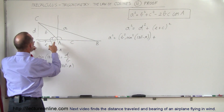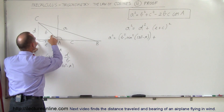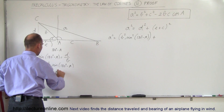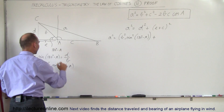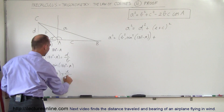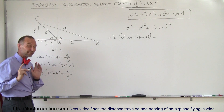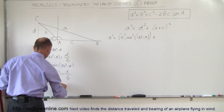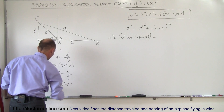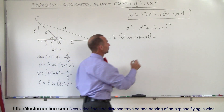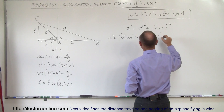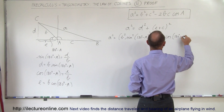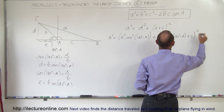Now E. How do we replace E? E is the adjacent side to that angle, so the cosine of 180 degrees minus A equals the ratio of the adjacent side E divided by the hypotenuse B. We can solve that equation for E: E equals B times the cosine of 180 degrees minus A. So the expression becomes B times the cosine of 180 degrees minus A, plus c, the whole quantity squared.